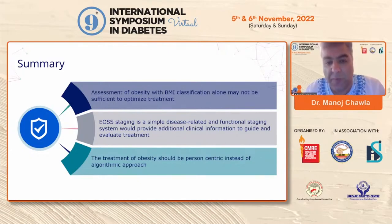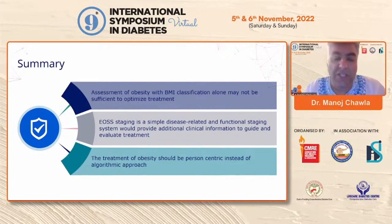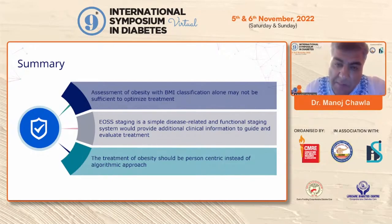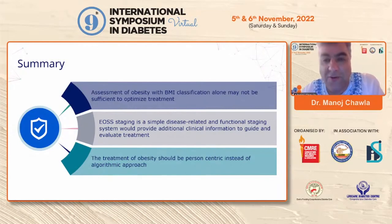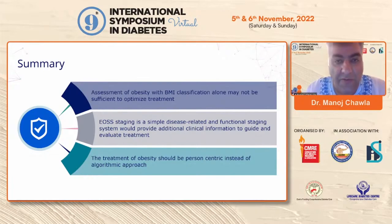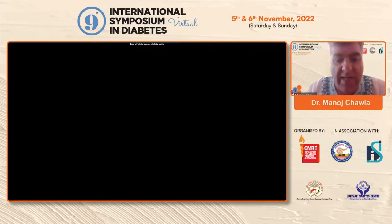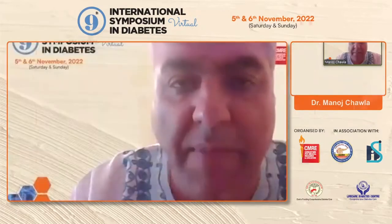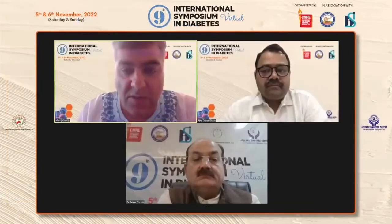To summarize: assessment of obesity with BMI alone may not be sufficient to optimize treatment. The Edmonton Obesity Staging System is a simple disease-related and functional staging system that provides additional clinical information to determine what kind of treatment to offer — which may not be possible on the basis of BMI alone. The treatment of obesity should be person-centric rather than algorithm-based or BMI-based, taking into consideration the patient's mental status and functionality.